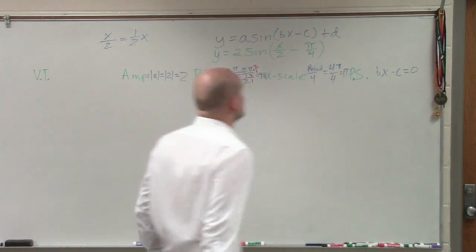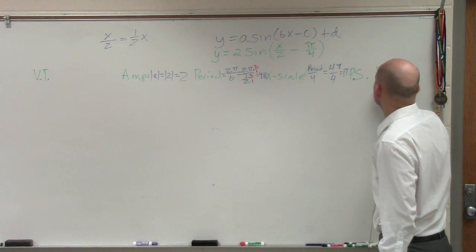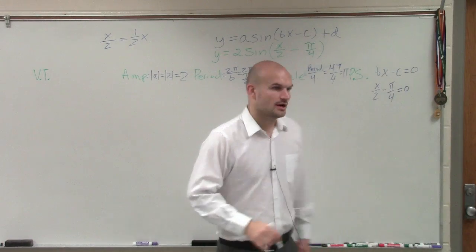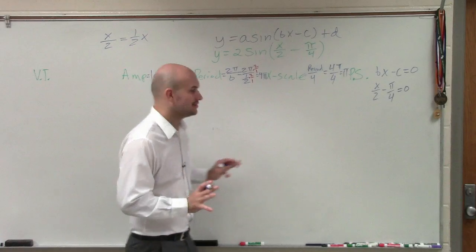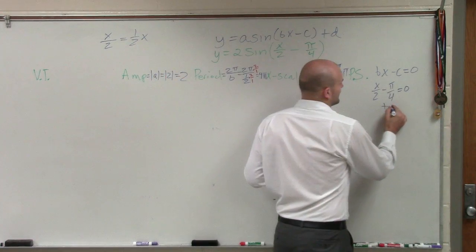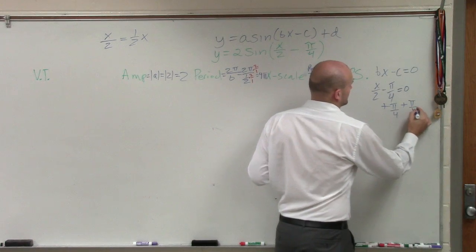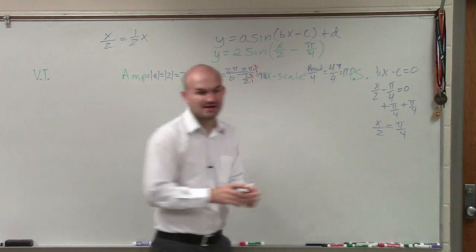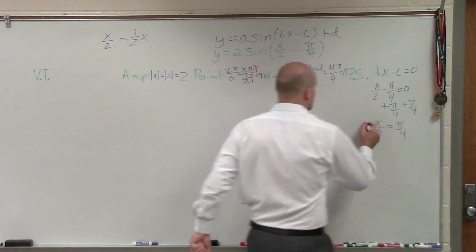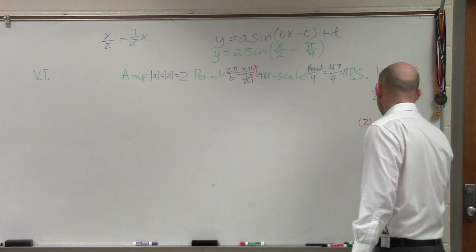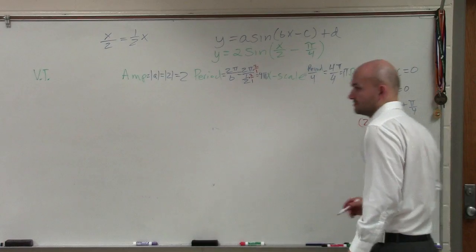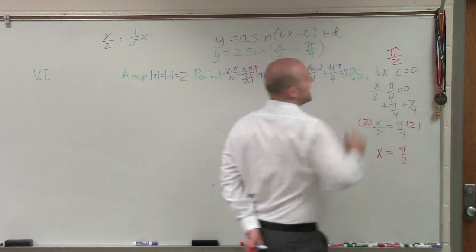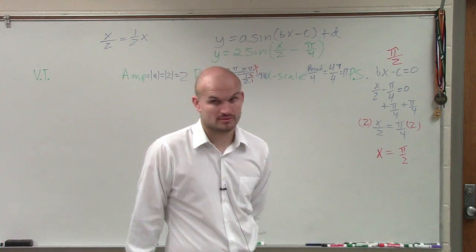If we take our phase shift and set this equal to 0, that's going to affect what our phase shift is. I'll take x over 2 minus π over 4 equals 0. It gets a little tricky, but we'll just go through it. If I add π over 4 on both sides, I have x over 2 equals π over 4. Then to solve for that, I multiply by 2 on both sides. Therefore, I have x equals π halves.